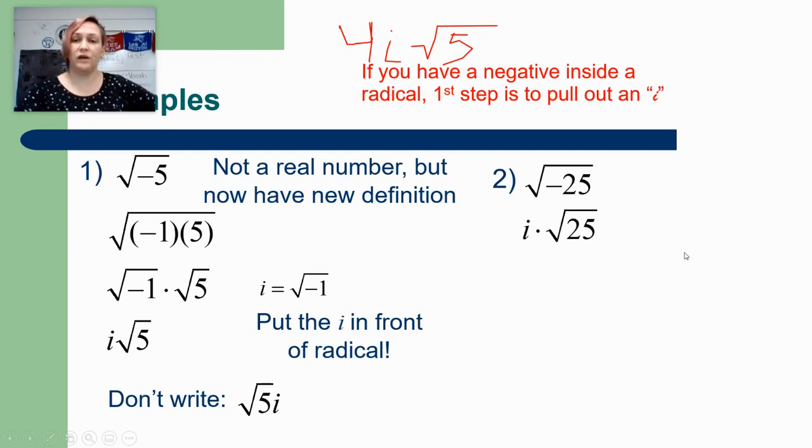So the square root of 25 is 5 and if we look at our order up here I'm actually going to write the 5 first. So 5i would be my final answer. So again, negative number on the inside, you're going to have a letter i in your answer.